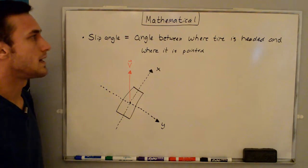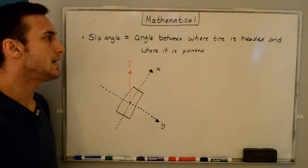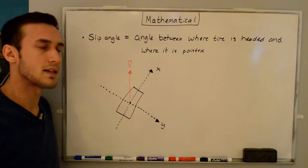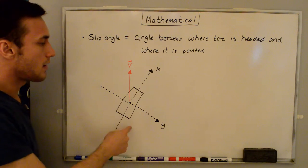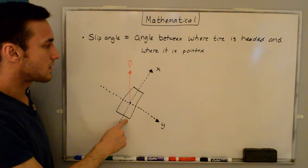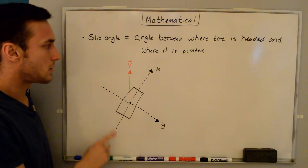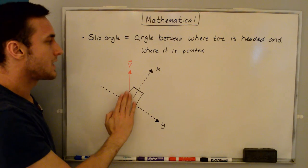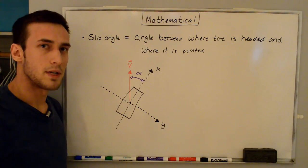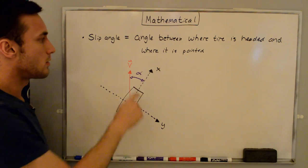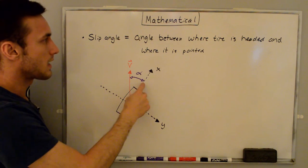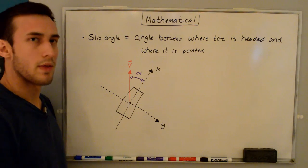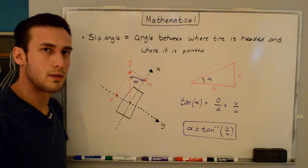The slip angle is defined as the angle between where the tire is headed and where it is pointed — so we find the angle between the velocity vector of the tire and the x-axis of the tire axis system. In the top view diagram, the x-axis points straight out of the tire, the y-axis points right, and the tire is moving in the direction of the velocity vector v. The slip angle is drawn between the velocity vector and the x-axis of the tire, and we denote it with alpha.